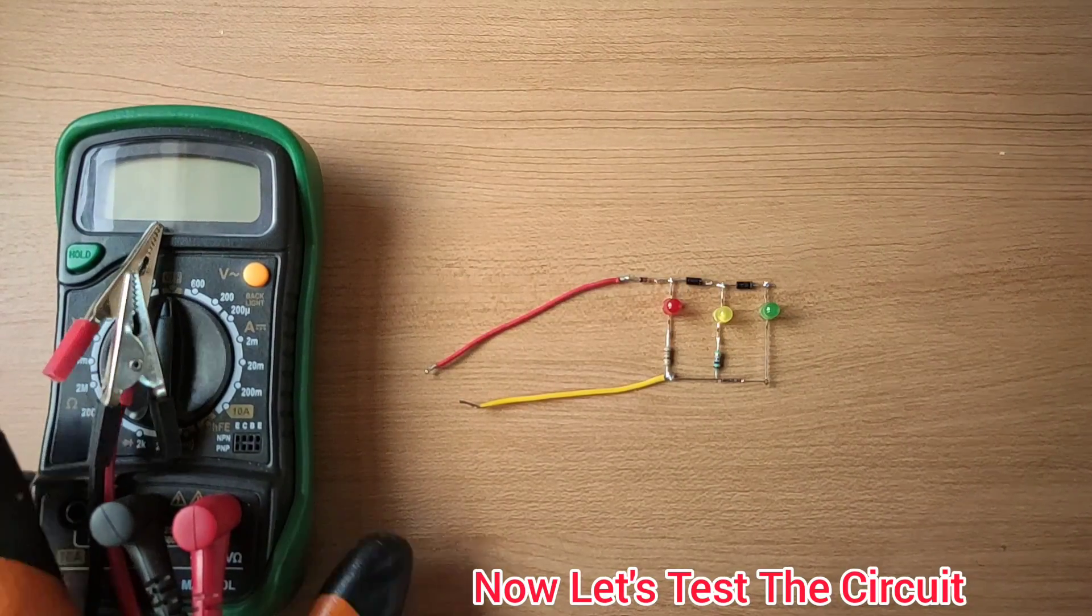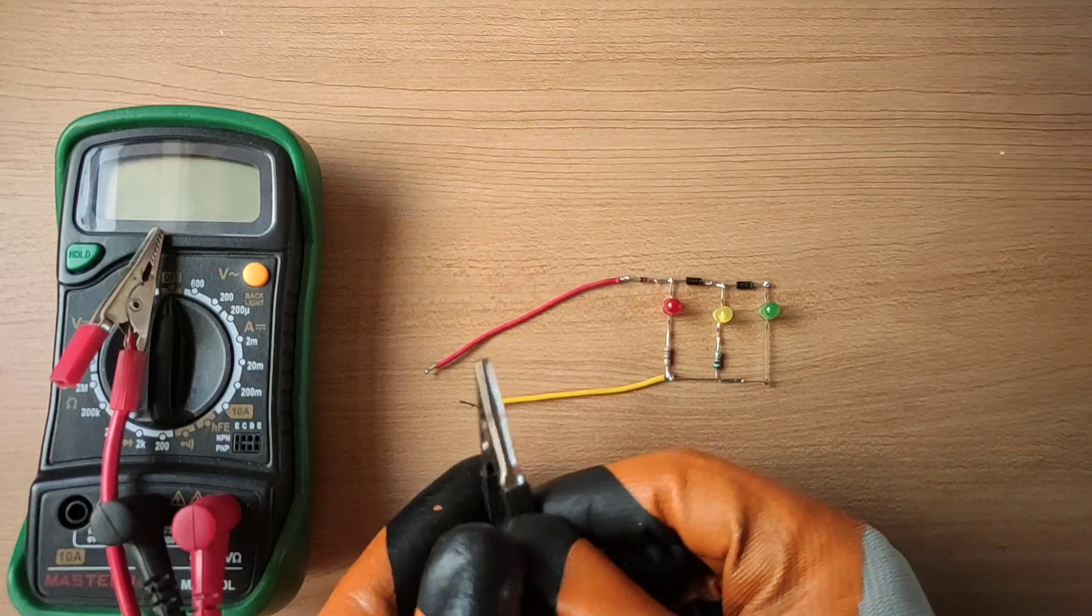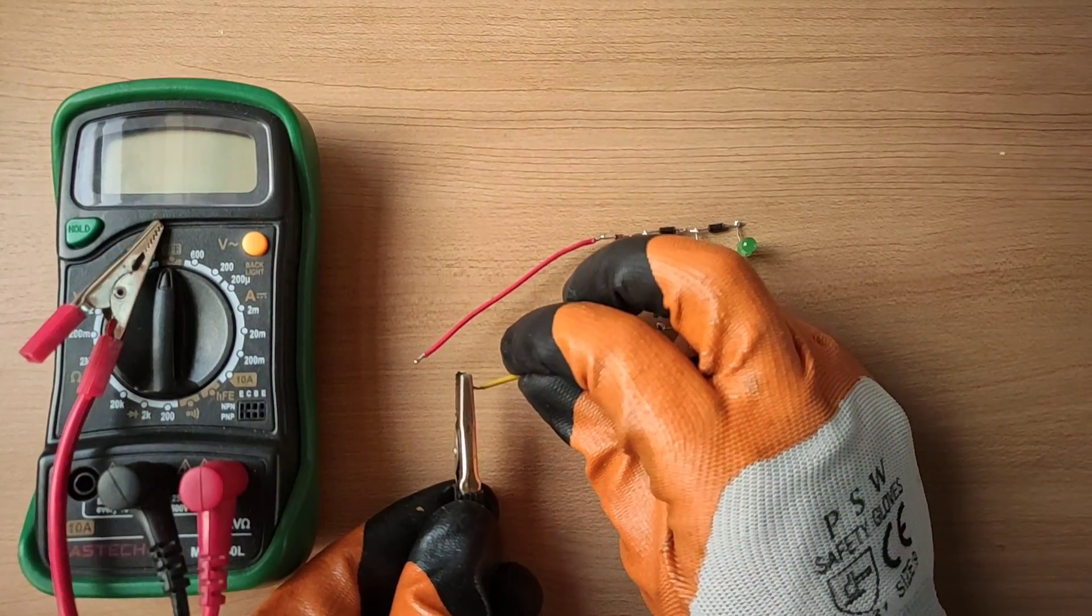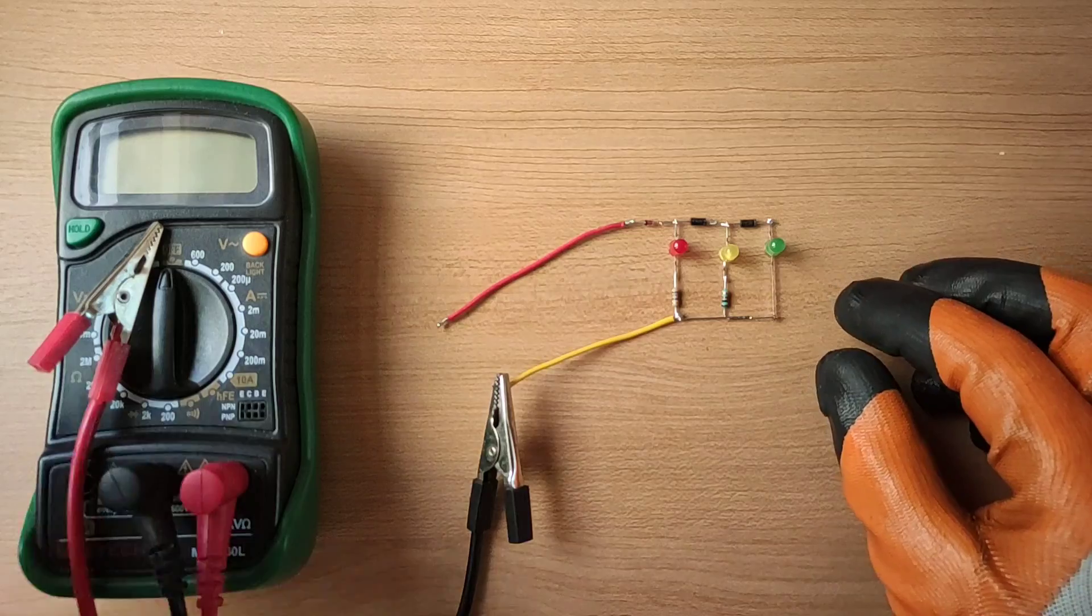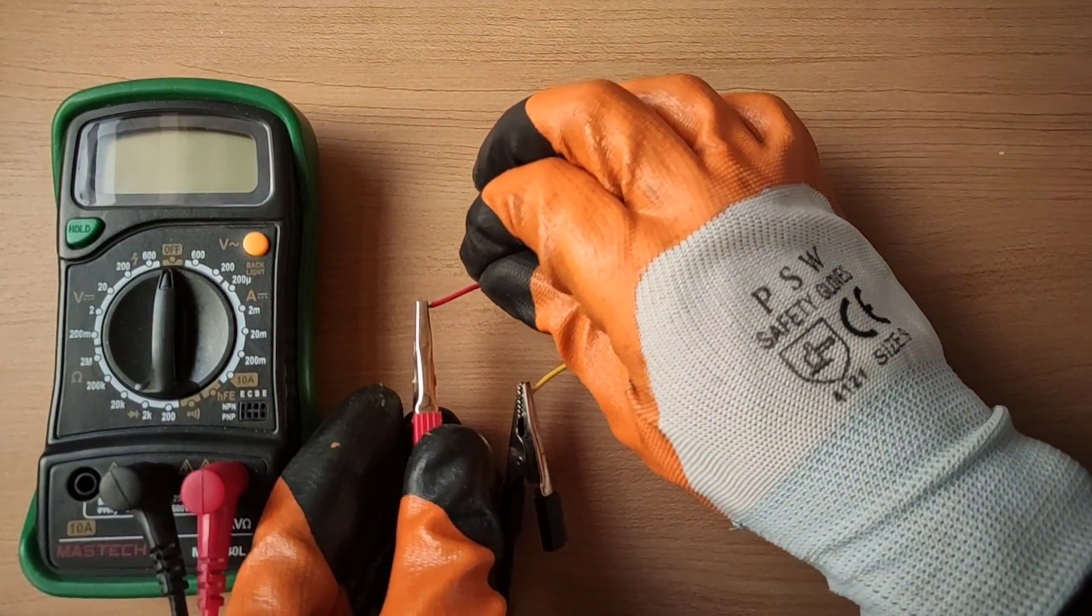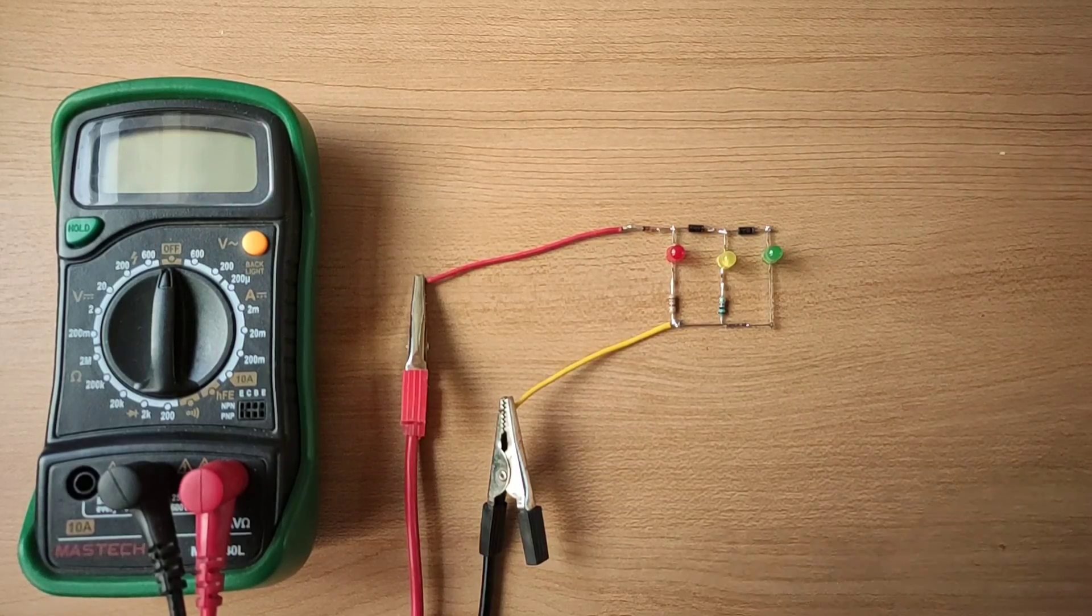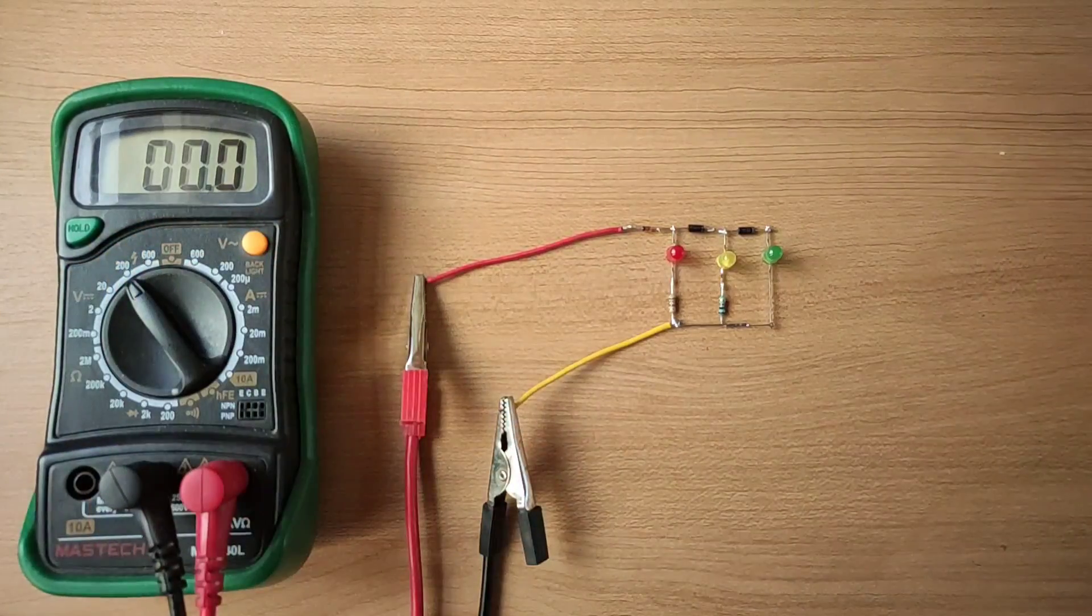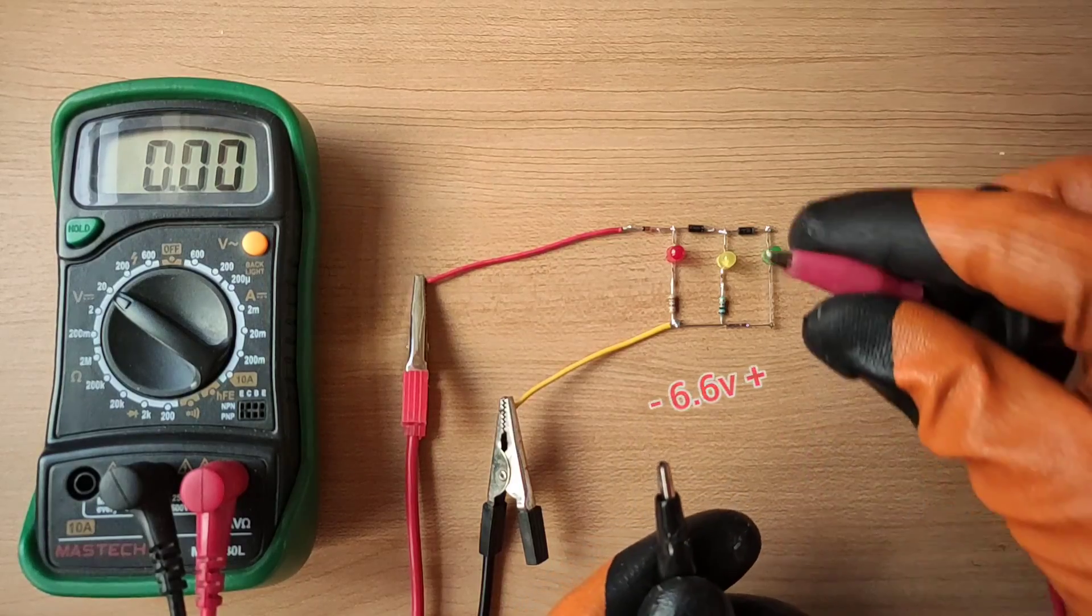Now let's test the circuit. To monitor the voltage, I will connect the multimeter with circuit. Now let's connect variable power supply to circuit.